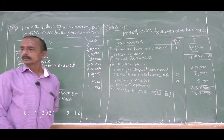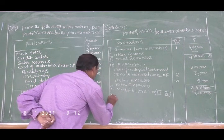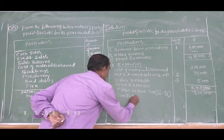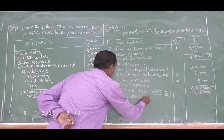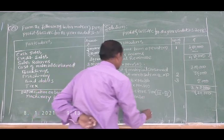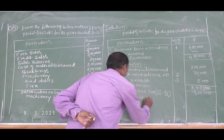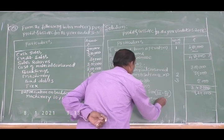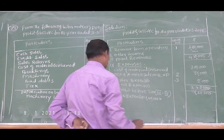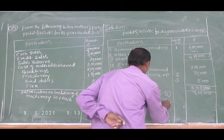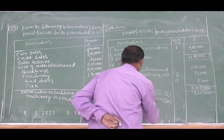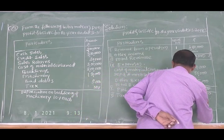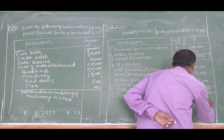Tax expenses. One lakh forty thousand — tax is calculated on one lakh forty thousand.